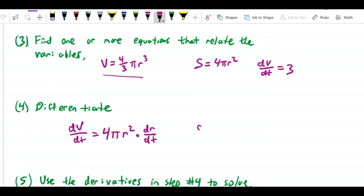And then I do the same with S. I'm going to write dS/dt is 8 pi r, but then I have to do the same thing again, dr over dt.